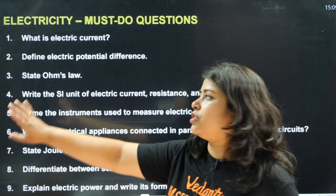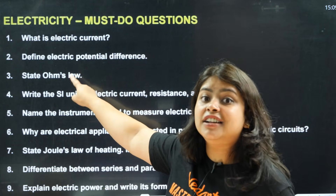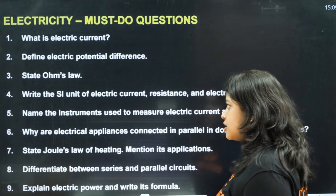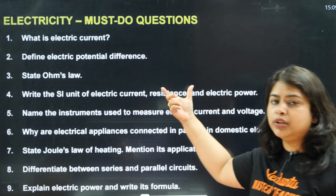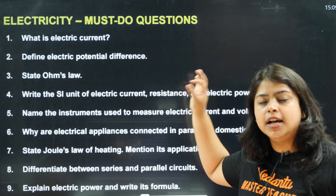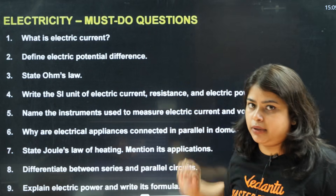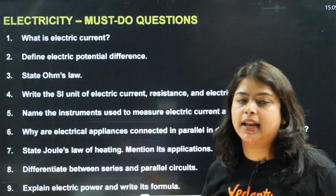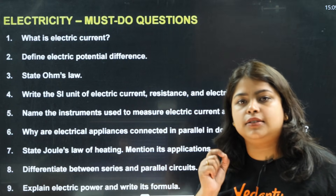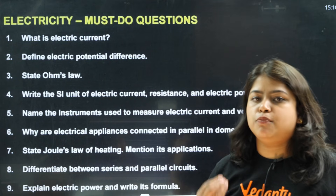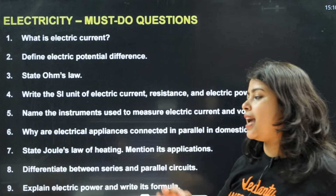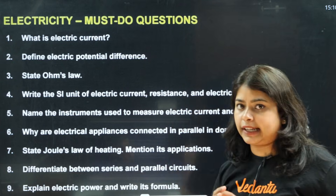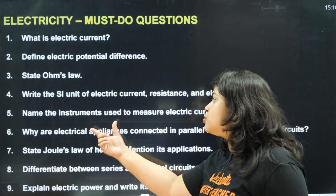Don't forget to study Ohm's law definition and its formula clearly. Next: SI units of electrical current, resistance, and electrical power. SI units are important not only for one-mark questions but also for your numericals. If you write the wrong units in numericals, you will lose half or one mark. So please don't miss it — practice the SI units of electrical current, resistance, and electrical power perfectly.